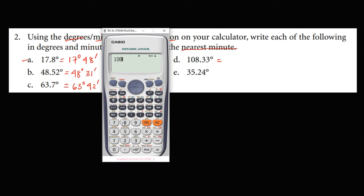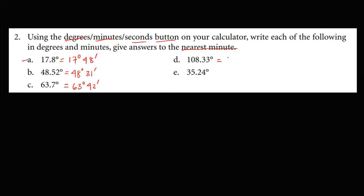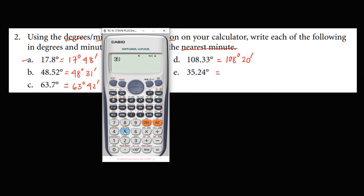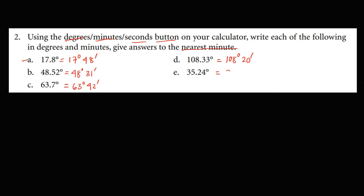For 108.33 degrees, since the seconds are more than 30, the 19 minutes becomes 20 minutes. So we have 108 degrees and 20 minutes. For 35.24 degrees, since the seconds are less than 30, the final answer is 35 degrees and 14 minutes.